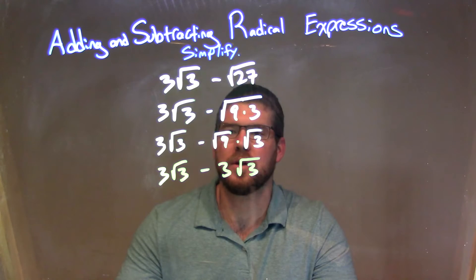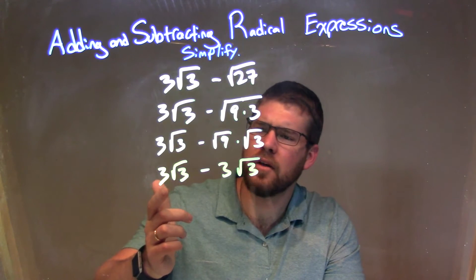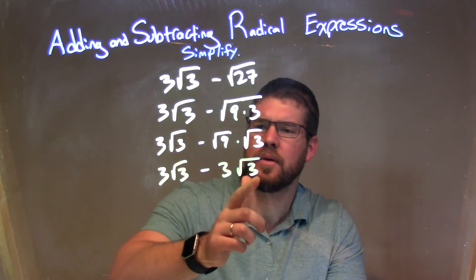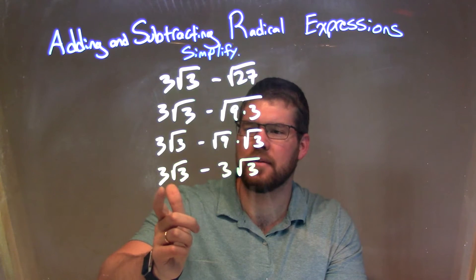And so now we look at this and say, okay, since we have the same square root of 3, we look at the number out front and we subtract them.